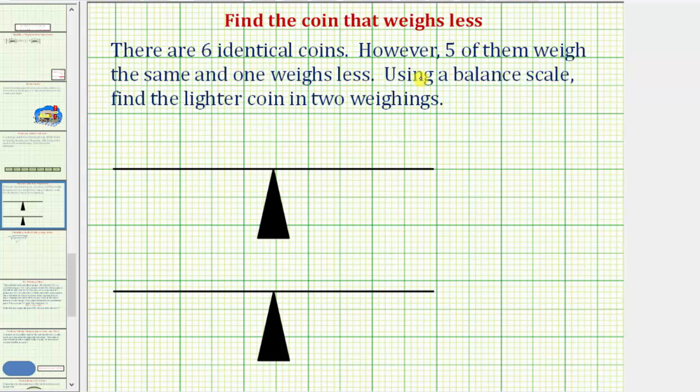There are six identical coins. However, five of them weigh the same and one weighs less. Using a balance scale, find the lighter coin in two weighings.